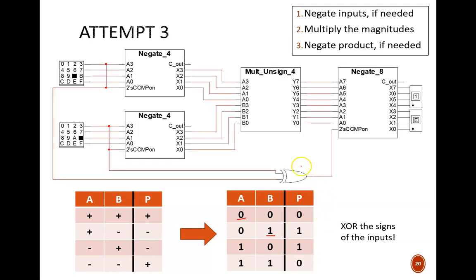What we see here is the truth table for exclusive OR. So, on the circuit, we can pass the sign bit of the input numbers into an exclusive OR gate and use its output to determine the operation of the final negator. Clever! We can read this logic as the final product will be negative if one and only one input is negative.